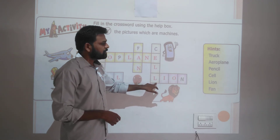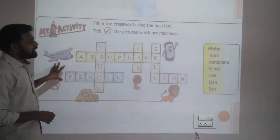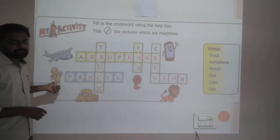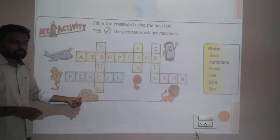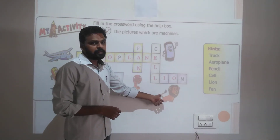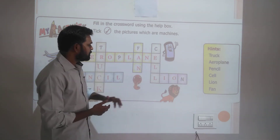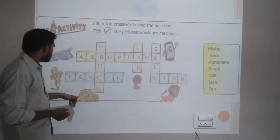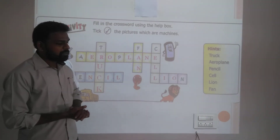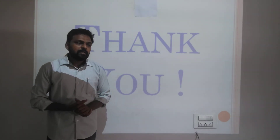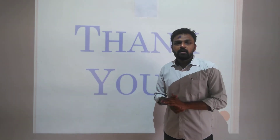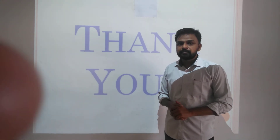Now from these, you have to tick which ones are machines. Is aeroplane a machine? Yes. Is pencil a machine? No. Is truck a machine? Yes. Is fan a machine? Yes. Is lion a machine? No. Is cell a machine? Yes. So tick cell, fan, truck, and aeroplane. This is how we have completed our testing time for Chapter 1. Write all these answers in your textbook or notebook — two times. Thank you.